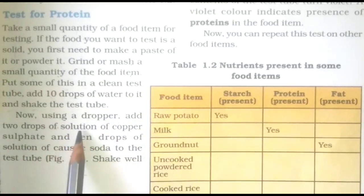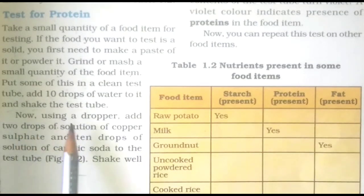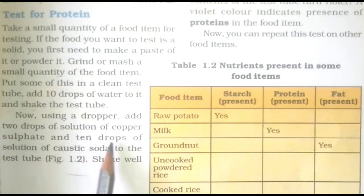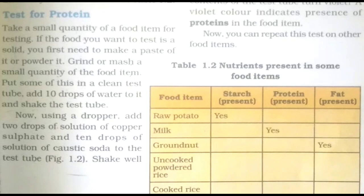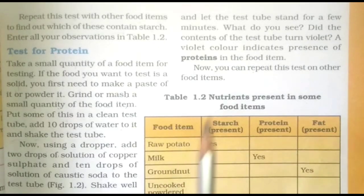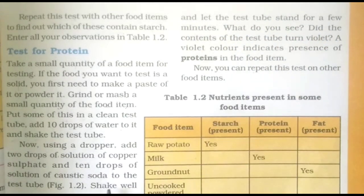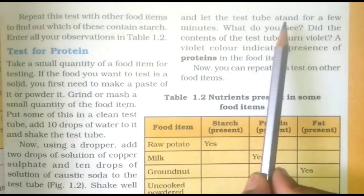Now, using a dropper, add 2 drops of copper sulphate solution and 10 drops of caustic soda solution to the test tube. अब dropper का उपयोग करके copper sulphate के solution की 2 drops और caustic soda के solution की 10 drops test tube में add कीजिये। This is shown in Figure 1.2. Shake well and let the test tube stand for a few minutes.